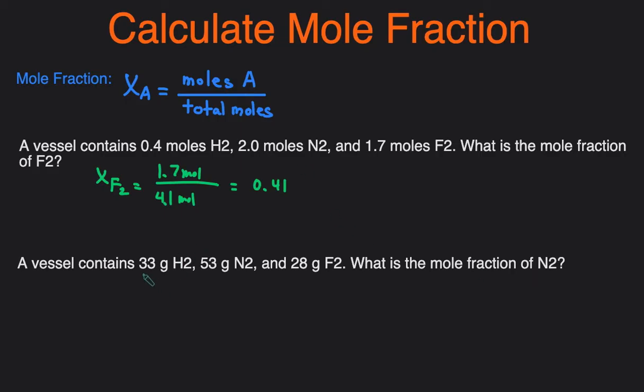To convert grams to moles, we just divide by the molar mass so this is just divided by about 2.02. This will be divided by approximately 28 and this will be divided by approximately 38 because those are the molar masses of the compound.